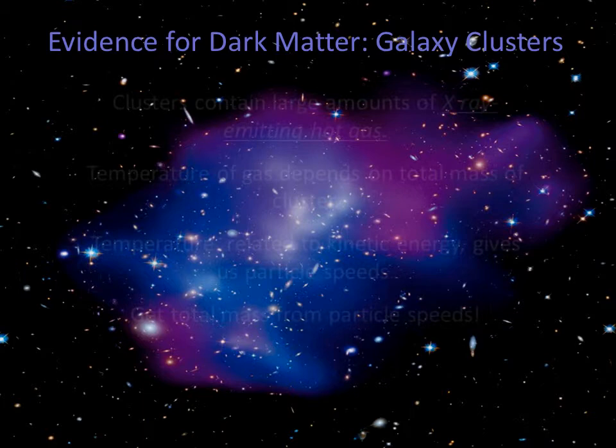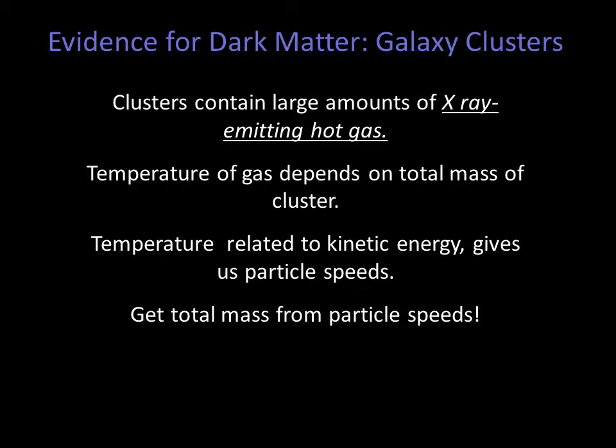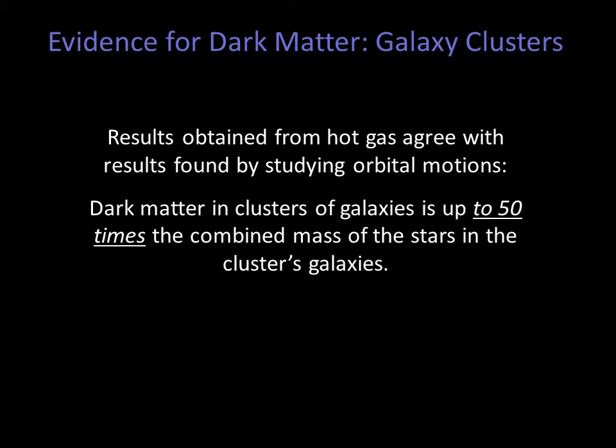Hot gas within galaxy clusters offers more evidence for the existence of dark matter. Within galaxies in a cluster, there is often hot X-ray emitting gas — up to 7 times as much mass in the form of gas compared to stars. We can measure the temperature of the gas, and since temperature is related to the movement of the gas particles, we can calculate the velocity of the particles. From the velocities, we can calculate the total mass of a cluster. The results obtained from hot gas agree with the results found from orbital motions. Dark matter in clusters of galaxies is up to 50 times the combined mass of the stars in the cluster's galaxies.